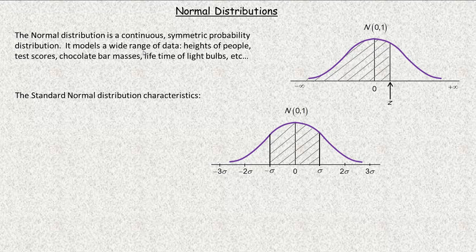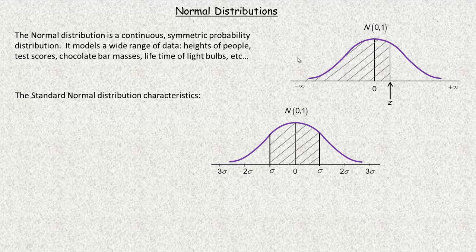Normal distributions model a wide range of data. For example: heights of people, test scores, chocolate bar masses, and the length of time that light bulbs last. Those are a few examples, but the normal distribution can be used to model many more.